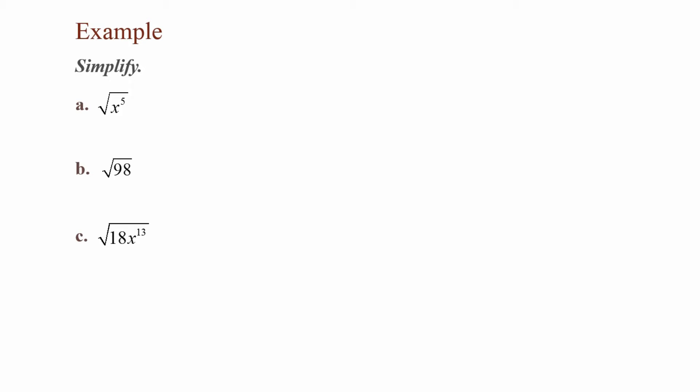In this example, we want to simplify. Part A, we have the square root of x to the 5th power. Since the exponent is odd, this is not a perfect square. However, if I rewrite it as the square root of x to the 4th times the square root of x, I now have the part of x to the 5th that's a perfect square. The square root of x to the 4th: 4 divided by 2 is 2, so I have x squared times the square root of x.